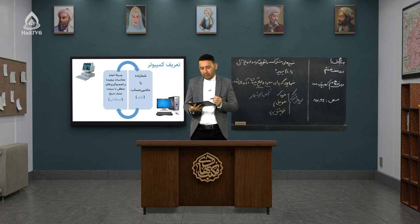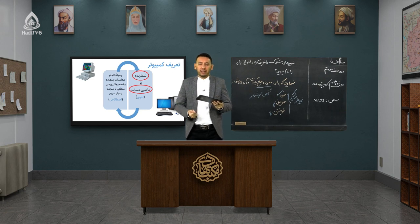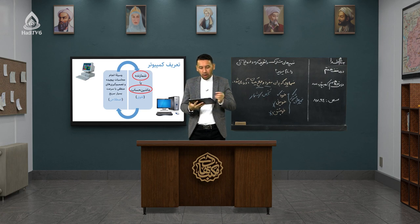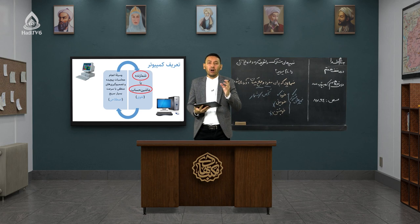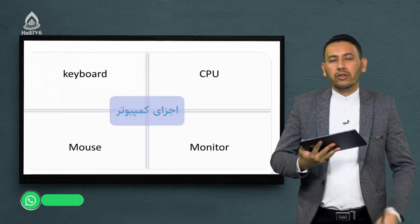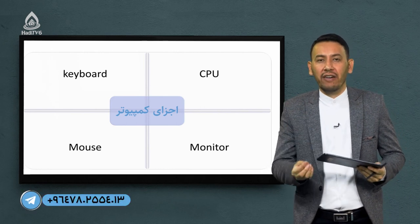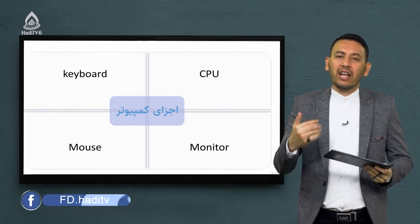دو تعریف در حوزه کمپیوتر وجود دارد: یک تعریف لغوی یا لفظی و یک تعریف اصطلاحی و علمی. به لحاظ لغوی کمپیوتر یعنی شمارنده یا ماشین حساب. کمپیوتر از «کمپیوت» می‌آید، یک واژه انگلیسی به معنای محاسبه کردن. به لحاظ اصطلاحی و علمی، کمپیوتر عبارت است از وسیله انجام محاسبات پیچیده و تصمیم‌گیری‌های منطقی با سرعت بسیار بالا. اجزای کمپیوتر به طور کلی از اجزای بسیار متعدد، متنوع و مختلفی تشکیل شده.